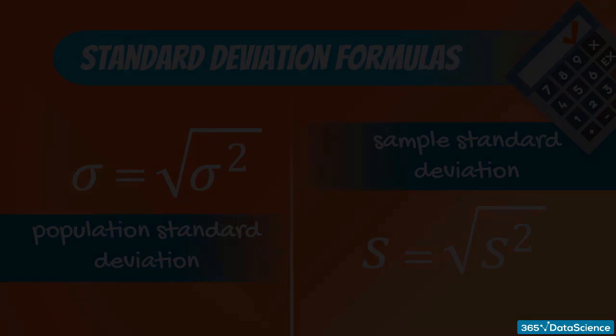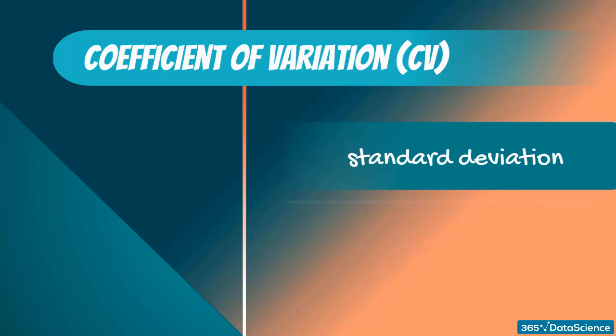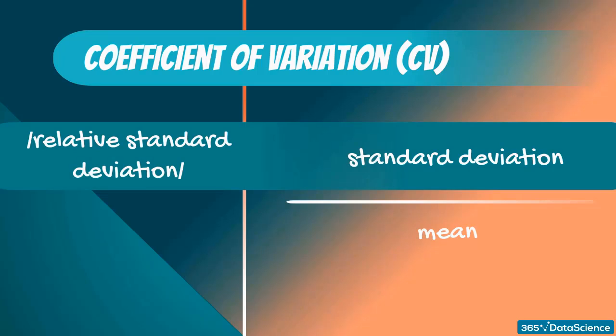Alright. The other measure we still have to introduce is the coefficient of variation. It is equal to the standard deviation divided by the mean. Another name for the term is relative standard deviation. This is an easy way to remember its formula. It is simply the standard deviation relative to the mean.